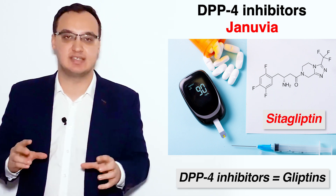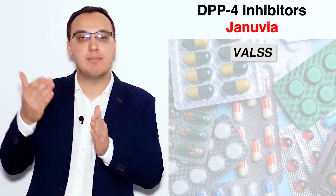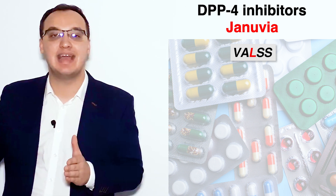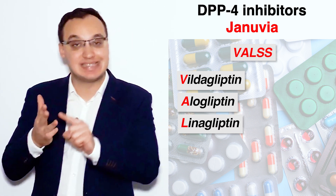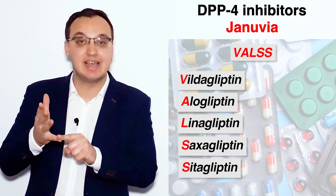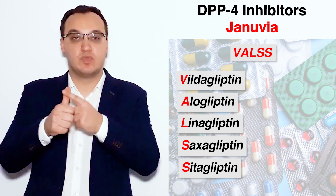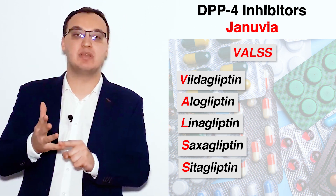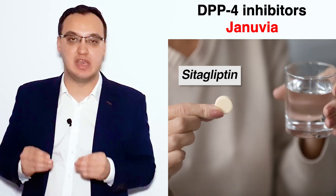We can remember the other DPP4 inhibitors using the mnemonic VALSS: vildagliptin, alogliptin, linagliptin, saxagliptin, and sitagliptin. Today we are focusing on sitagliptin, which is Januvia.